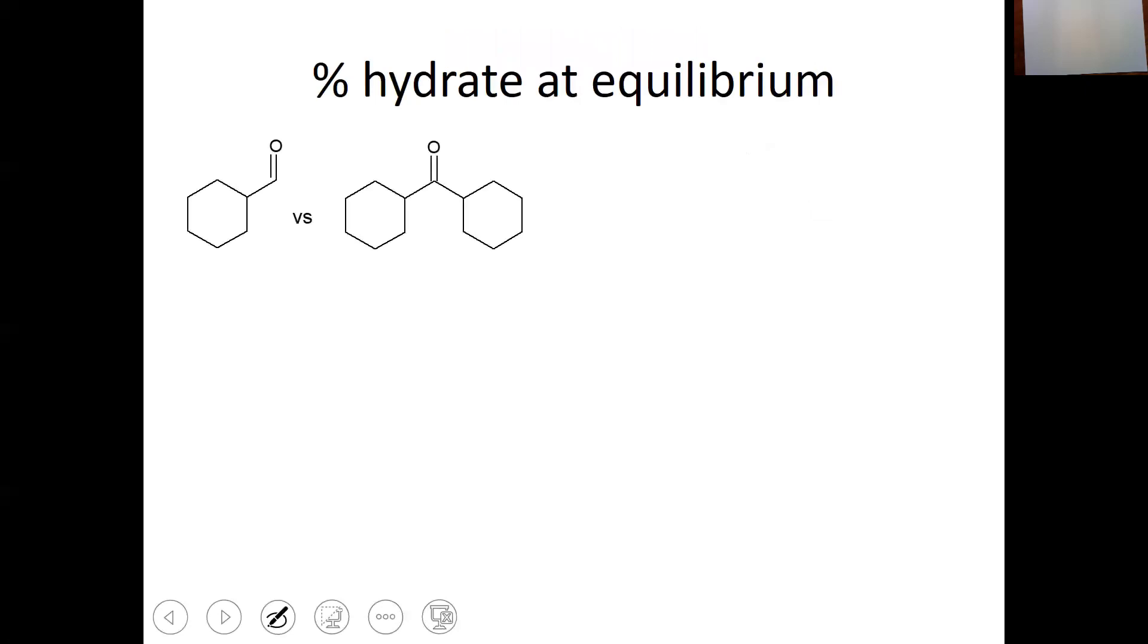If I compare these two carbonyl compounds, which one has a greater percent hydrate at equilibrium? Remember, we're looking for which one has the most partially positive carbonyl carbon. Aldehydes are more reactive than ketones because they have a more partially positive carbonyl carbon. Remember, hydrogen is our baseline that we compare things to, and then carbons are electron donors. So, a ketone has two carbon groups, two electron donors. An aldehyde has one carbon group, so one donor, and one hydrogen, which is not a donor or a withdrawer. It's just a hydrogen. So, an aldehyde is more reactive than a ketone because the carbonyl carbon is more partially positive. So, an aldehyde has a greater percent hydrate at equilibrium than a ketone.